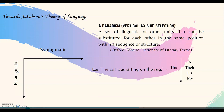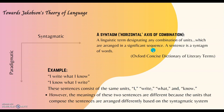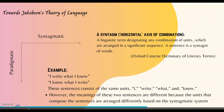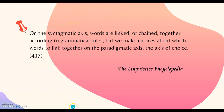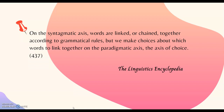On the syntagmatic axis — the horizontal axis of combination — we combine linguistic units into a recognizable order, so any sentence is a syntagm of words. For example, 'I write what I know' and 'I know what you write' contain the same units — I, write, what, know — however the meanings differ because the units are arranged differently. Words are linked or chained together according to grammatical rules, whereas the paradigmatic axis is the axis of choice about which words to link together.